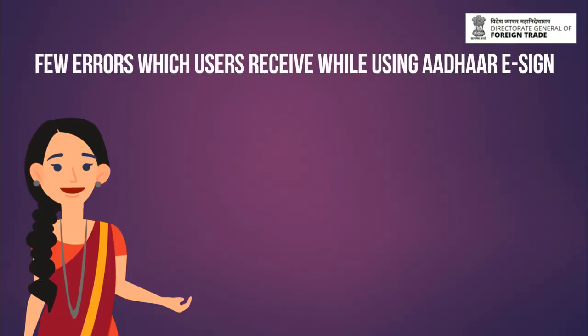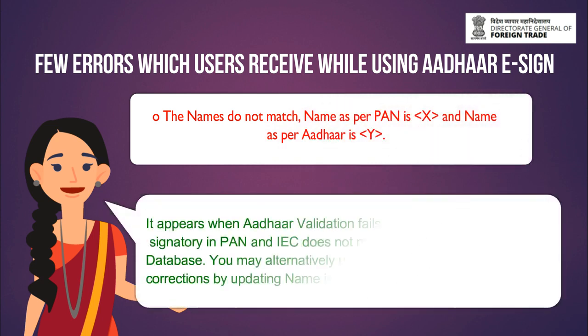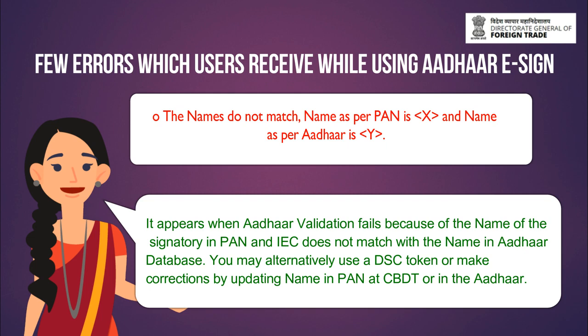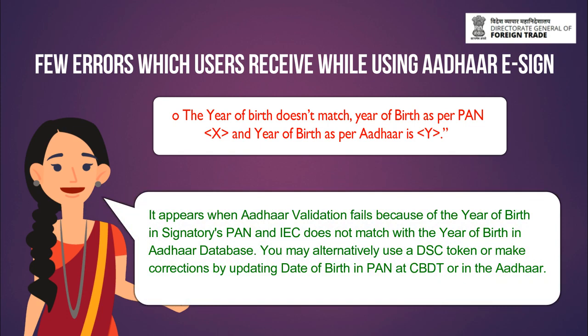I would like to highlight a few errors which users receive while using Aadhaar eSign. The first message is seen when Aadhaar validation fails because the name of the signatory in PAN and IEC does not match with the name in the Aadhaar database. You may alternatively use a DSC token or make corrections by updating the name in PAN at CBDT or in the Aadhaar. The second message is seen when Aadhaar validation fails because the year of birth in the signatory's PAN and IEC does not match with the year of birth in the Aadhaar database. You may alternatively use a DSC token or make corrections by updating the year of birth in PAN at CBDT or in the Aadhaar.